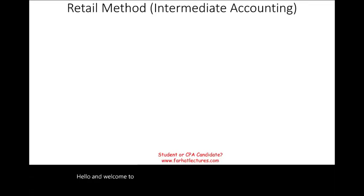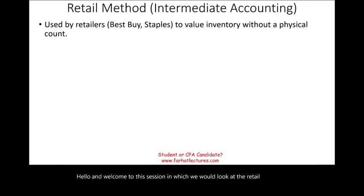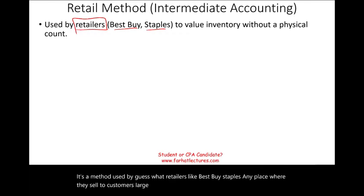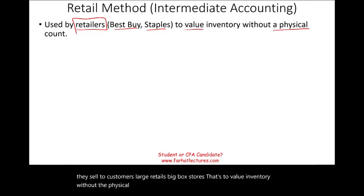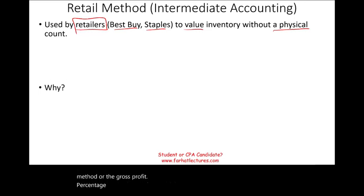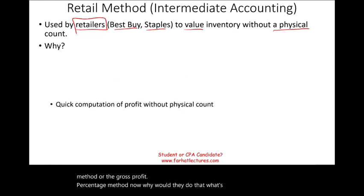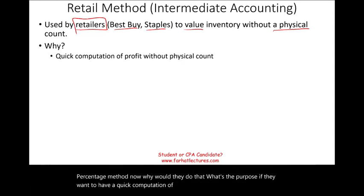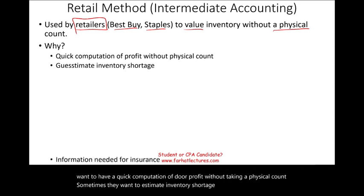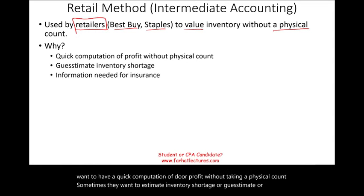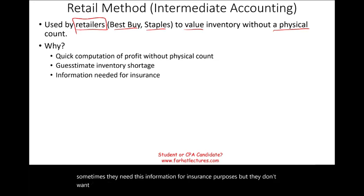Welcome to this session on the retail method. It's a method used by retailers like Best Buy and Staples — large big-box stores — to value inventory without a physical count. It's very similar to the gross profit margin method. Retailers use it for a quick computation of profit, to estimate inventory shortage, or for insurance purposes when they don't want to do a full physical count.